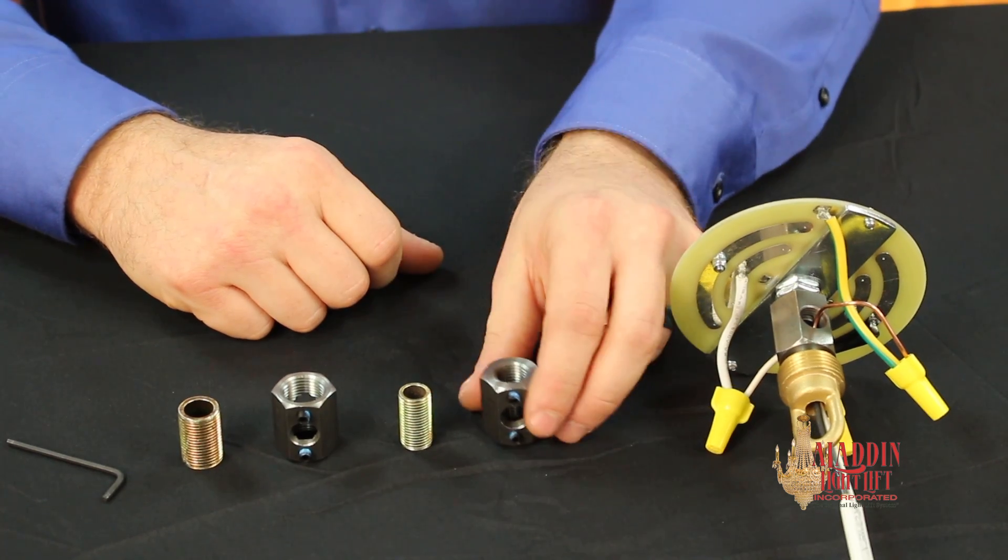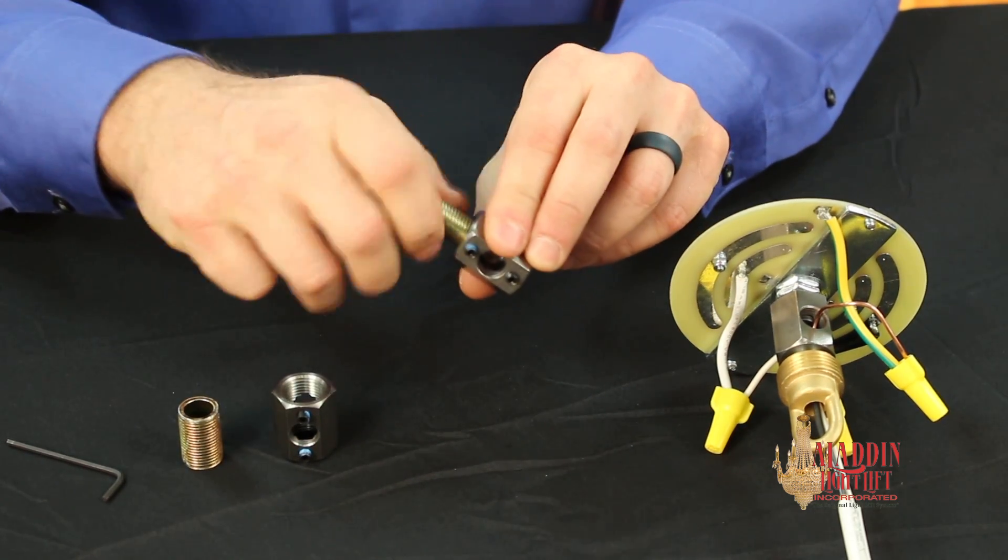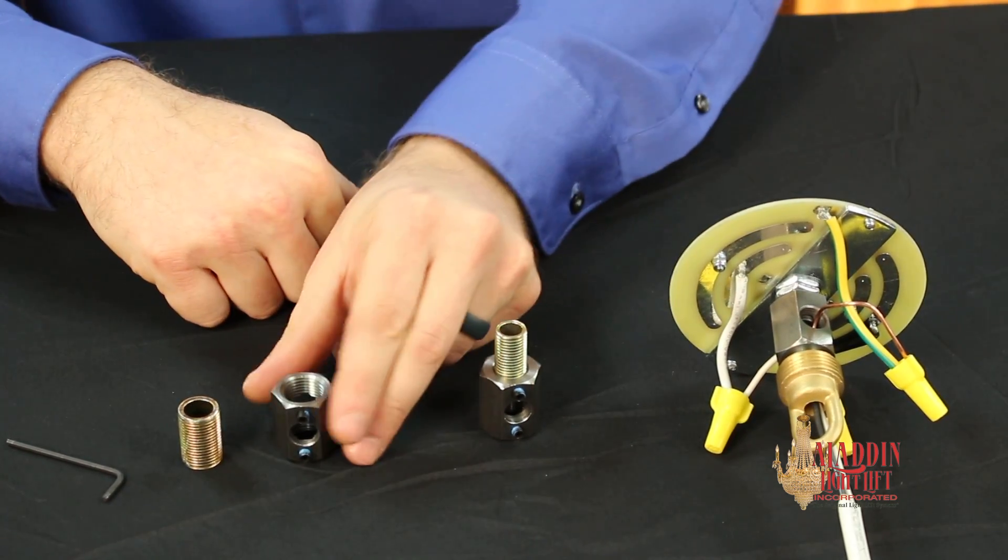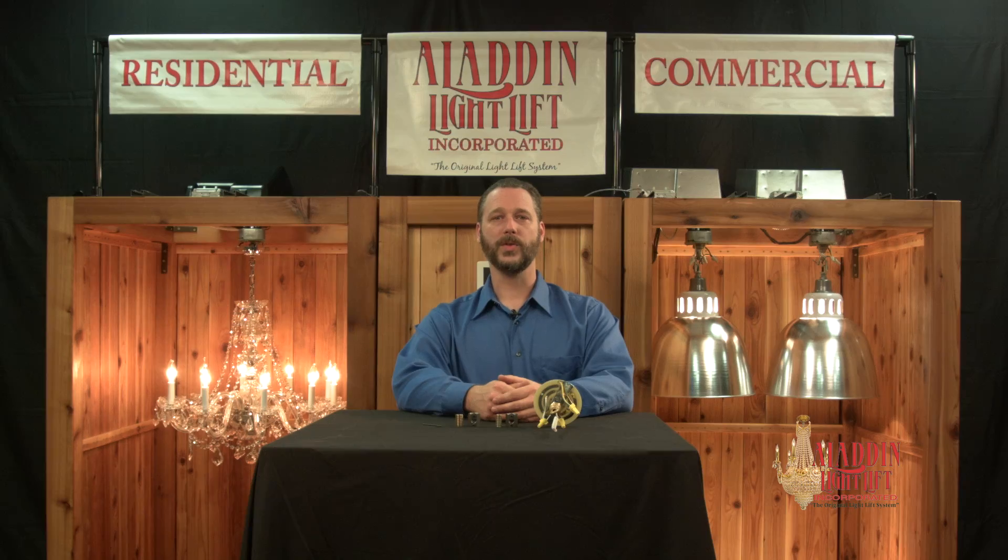200 and 300 pound lifts are equipped with a 1/4 IPS coupler. 700 and 1,000 pound lifts are equipped with a 3/8 IPS coupler. Also available from Aladdin are 1/8 IPS, 1/2 IPS, and an array of metric sized couplers.